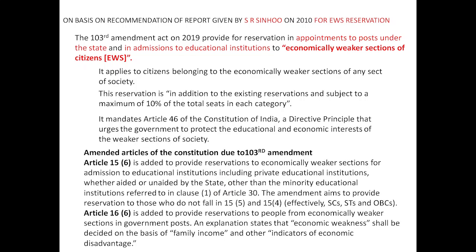As per the 103rd Amendment Act, two clauses were added to Article 15 and Article 16 — that is, Article 15(6) and Article 16(6). These say that reservations should be provided to the economically weaker sections in educational institutions as well as in jobs. This reservation is to be given on the basis of family income or other indicators of economic disadvantage, such as the land size owned by the family or the general income received by the family or per person.